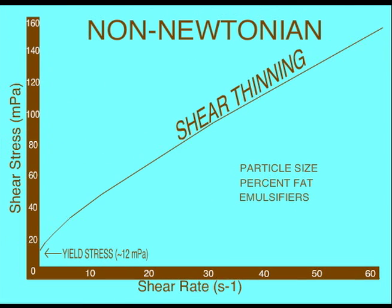According to the International Office of Cocoa, Chocolate, and Sugar Confectionary, the yield stress should be obtained at 5 radians per second, and the apparent viscosity at 40 radians per second, for the most reproducible and informative results.